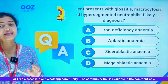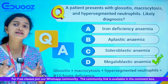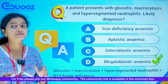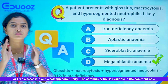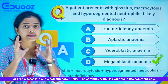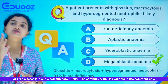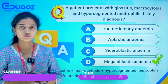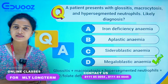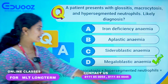So the main feature of Megaloblastic Anemia is hypersegmented neutrophils — that is a crucial feature. They also have macrocytosis and glossitis. These features match Megaloblastic Anemia, so that is the answer to the second question.